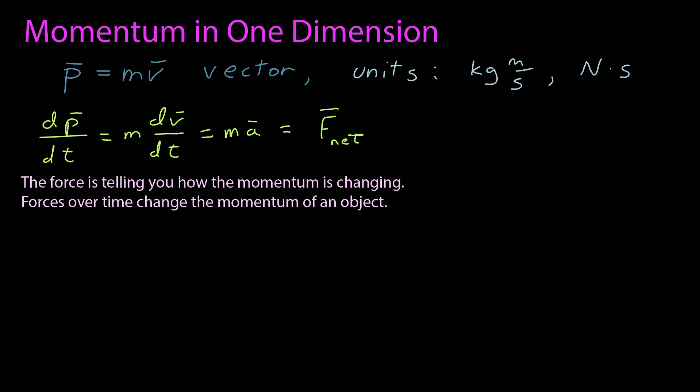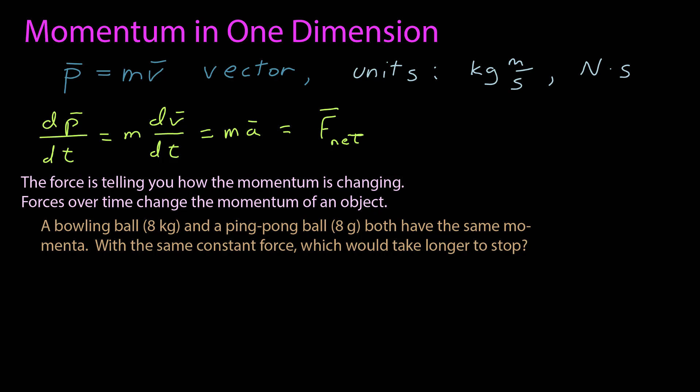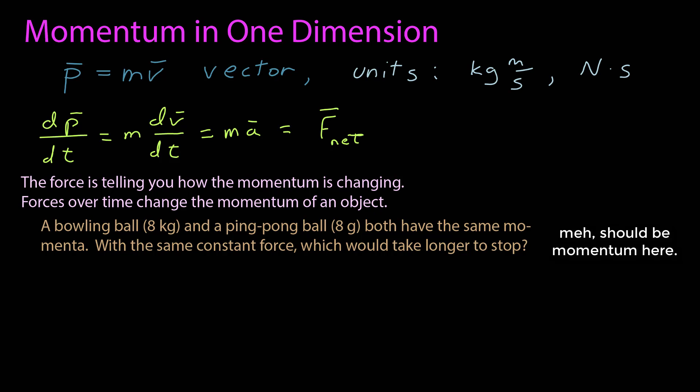Let me give you a typical trick question that physics professors ask. You have a bowling ball of eight kilograms and a ping-pong ball of eight grams. Both have the same momentum. With the same constant force, which would take longer to stop? The answer is it's exactly the same. You want to say the bowling ball because it has a larger mass and should be harder to stop, but they have the same momentum — it is the momentum that is changing when you apply a net force.